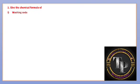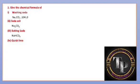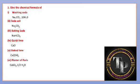Give the chemical formula of washing soda — it is Na2CO3·10H2O. Soda ash is Na2CO3 itself. Baking soda is different; baking soda is also called sodium hydrogen carbonate or sodium bicarbonate. Quick lime is CaO, calcium oxide. Slaked lime is calcium hydroxide. Plaster of Paris is calcium sulfate hemihydrate — CaSO4·½H2O. Limestone is CaCO3. These are very important chemical formulas they may ask in examination.